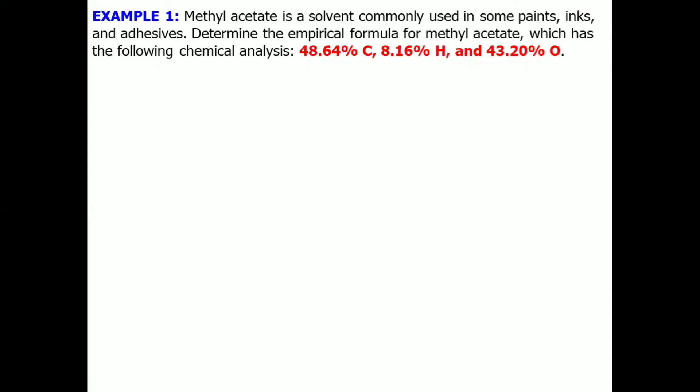Based on the poem that we have read, our first step is percent to mass. First, let's list down the given for carbon, hydrogen, and oxygen. But take note, we have to assume that the sample is equal to 100 grams. And with that, carbon is equal to 48.64 grams, hydrogen takes 8.16 grams, and oxygen is 43.20 grams.